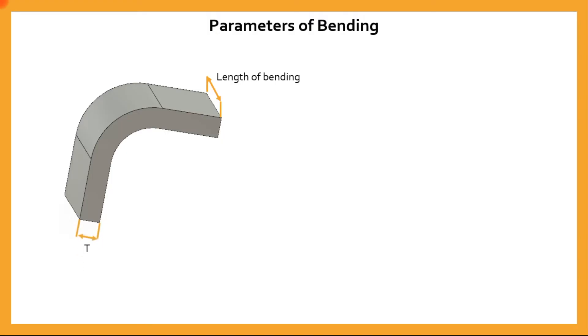This is the thickness of the sheet metal. R signifies the inner radius of the bend, so that is the bend radius.